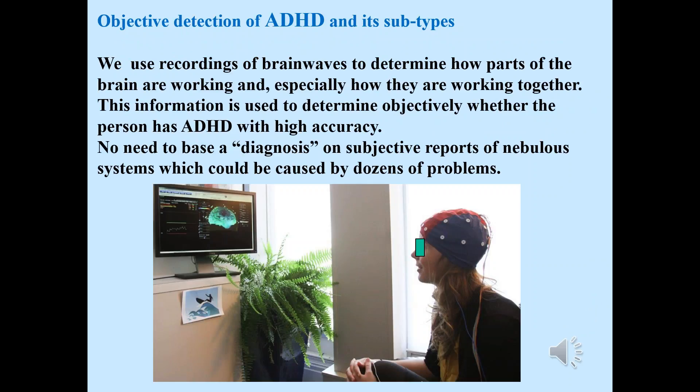Objective detection of ADHD and its subtypes. We use recordings of brain waves to determine how parts of the brain are working and, especially, how they're working together. This information is used to determine objectively whether the person has ADHD with nearly perfect accuracy. No need to base a diagnosis on subjective reports of nebulous symptoms, which could be caused by dozens of problems.